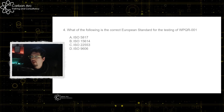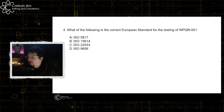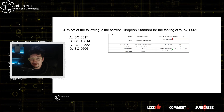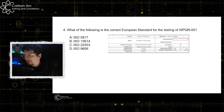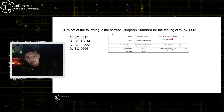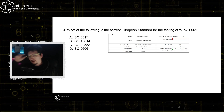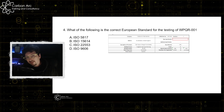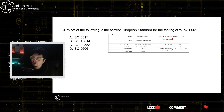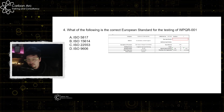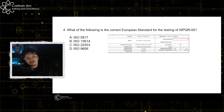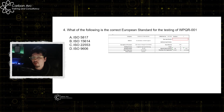Which of the following is the correct European standard for the test in WPQR001? Looking at the WPS section, we don't have a stated value, but in accordance with a European standard the best answer is ISO 15614. You can see we've got a group number of 8, so the sub-group would be ISO 15614-1. Note: ISO 5817 is for qualification and production acceptance criteria, ISO 22553 is for drawing symbols, and ISO 9606 is for welder qualification.